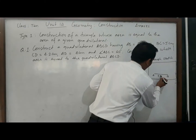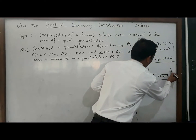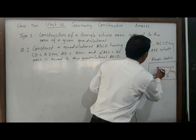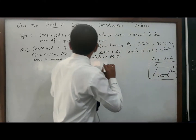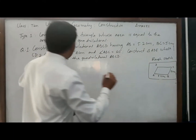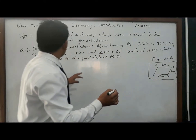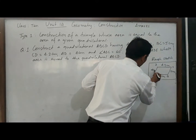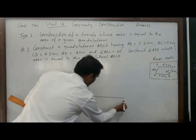AB is 5.2 cm and BC is 5 cm. With a free hand, draw C, then CD, then DA. CD is approximately 4.2 cm and AD is approximately 4 cm. The angle ABC is given as 60°. Now with the help of a scale, measure 5.2 cm.